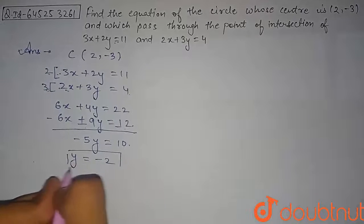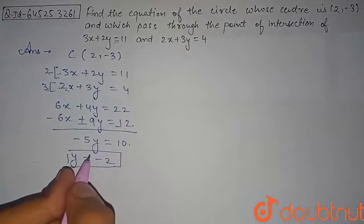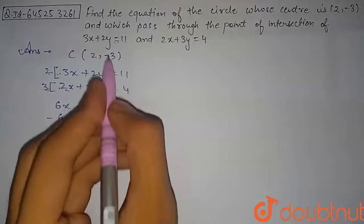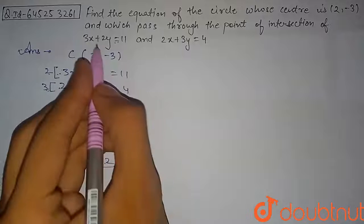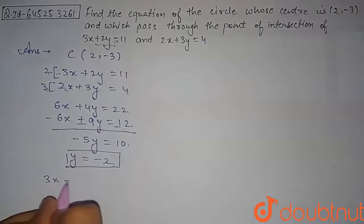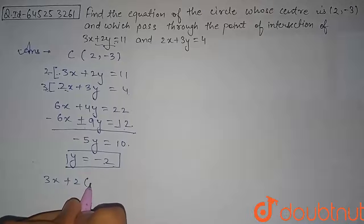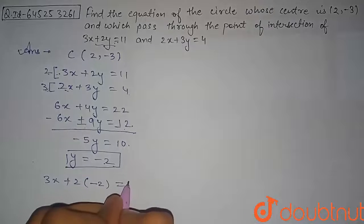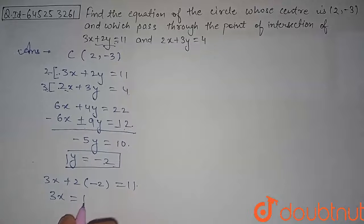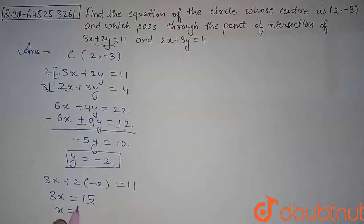So y = -2 is the y-coordinate of the point through which the circle passes. Substituting y = -2 into the first equation: 3x + 2(-2) = 11, giving 3x = 11 + 4 = 15, so x = 15/3 = 5.